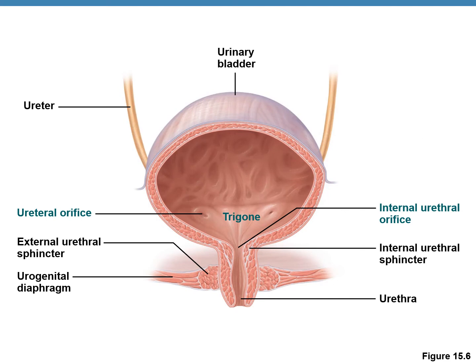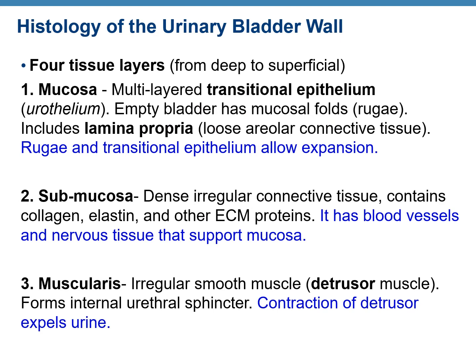This figure shows the trigone in the urinary bladder. The histology of the urinary bladder wall is a very important topic. The wall is made up of four tissue layers. Going from deep to superficial: the deepest layer is the mucosa, which lines the hollow lumen of the urinary bladder. It is made up mainly of transitional epithelium — multiple layers of epithelial cells known as urothelium.